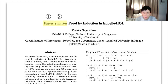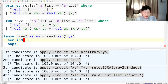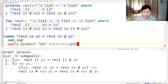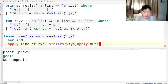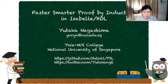Let me finish this talk with a demo. Here we have our example problem. If we invoke SemInd, it immediately produces recommendations in the output panel in the lower half, which we can copy and paste with one click. Let's summarize what we covered today. I introduced a recommendation tool for proof by induction in Isabelle. Compared to the state of the art, our tool can produce recommendations more quickly and accurately.